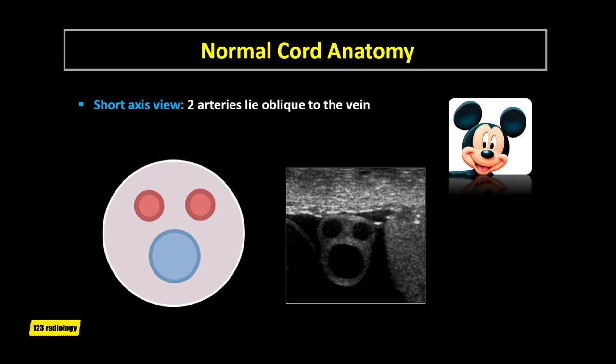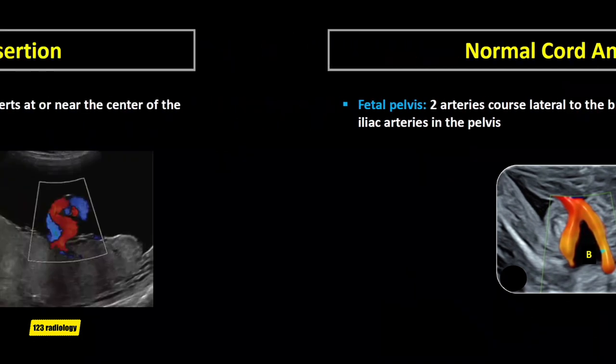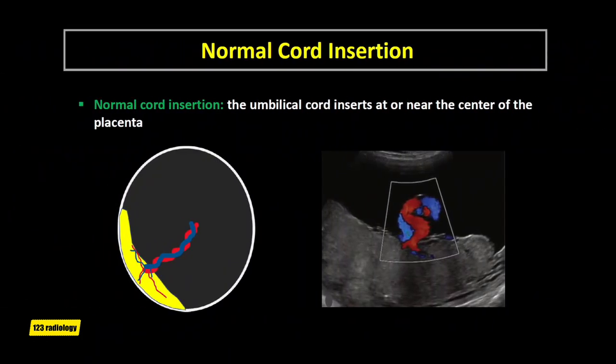On ultrasound of the normal three-vessel cord, the diameter of the umbilical artery is less than 50% of the vein diameter. In the fetal pelvis, the two umbilical arteries course lateral to the urinary bladder and are continuous with the iliac arteries. In normal cord insertion, the umbilical cord inserts at or near the center of the placenta, and in the fetus, the cord inserts at the umbilicus. This ultrasound image shows normal cord insertion in the center of the placental mass.